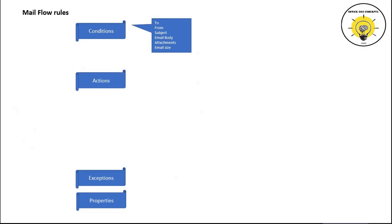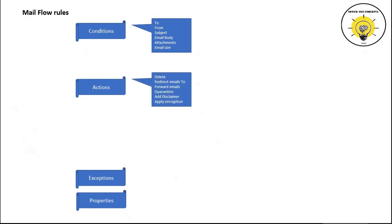Actions specify what to do with the emails that meet the conditions specified within the rule. With the help of actions we can delete emails, we can forward emails to an email address, we can add a disclaimer on every email, and we can move emails to the quarantine portal as well. There are multiple actions that we can configure within mail flow rules.